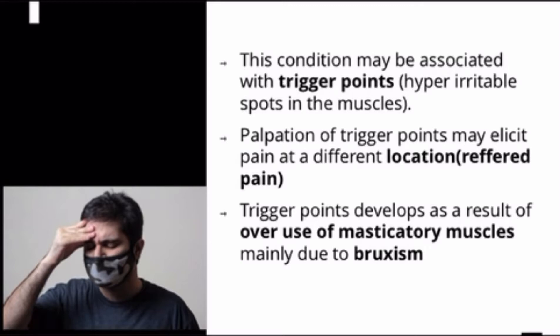Trigger points develop as a result of overuse of masticatory muscles, mainly due to bruxism — the clenching or over-grinding of teeth. When these habits cause the masticatory muscles to be overused, trigger points form, and when palpated, they lead to referred pain.